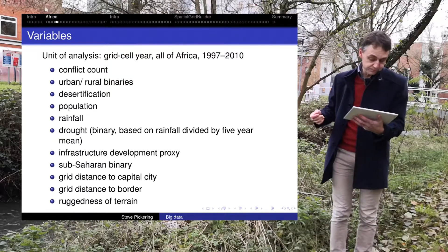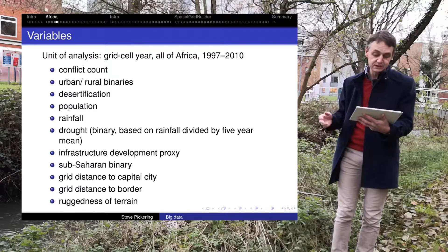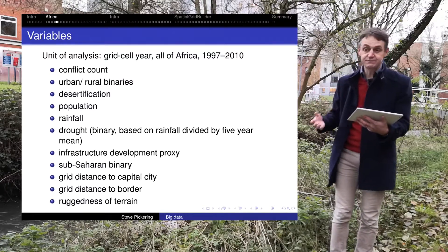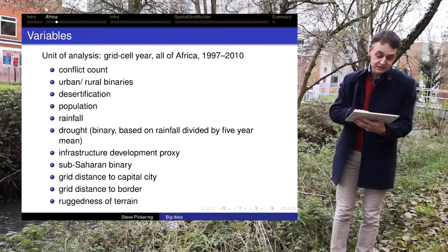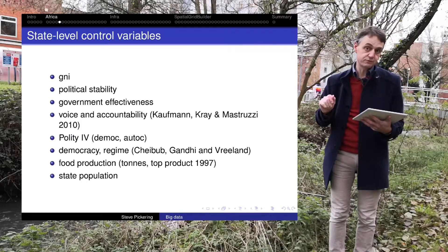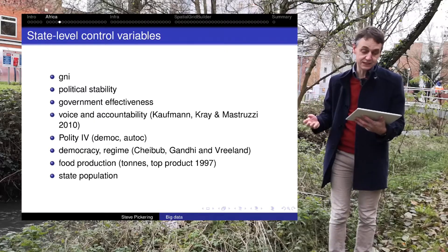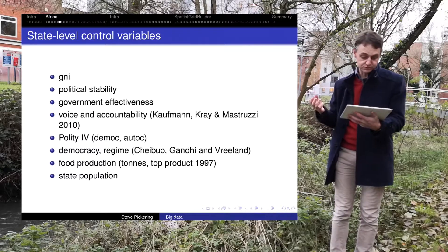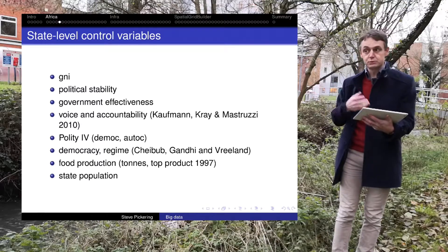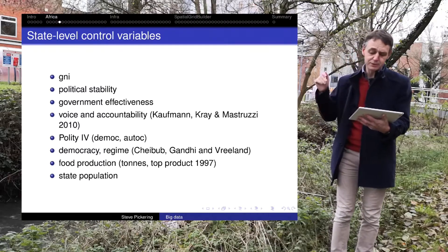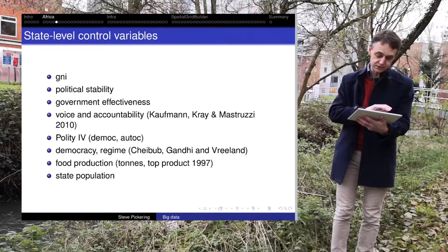For each grid cell we include: whether it's urban or rural, the level of desertification, population level, rainfall, drought, infrastructure, whether it's in sub-Saharan Africa, how far it is from the capital city, from the border, and how rugged the terrain is. In addition we have state-level control variables — not geospatially coded to the grid, but necessary to include: gross national income, political stability, government effectiveness, voice and accountability, and democracy/autocracy measures from Polity 4. Gandhi and Vreeland have another measure that does the same thing. We also include food production and state population as controls.